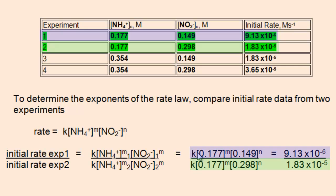In the numerator here, I have the initial concentrations for experiment 1. To the right of this fraction, right here, are the initial rates for each of the experiments. The initial rate for experiment 1, and beneath that the initial rate for experiment 2.